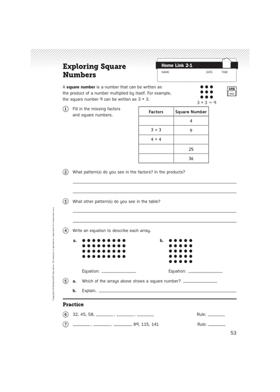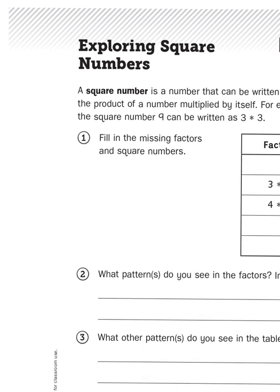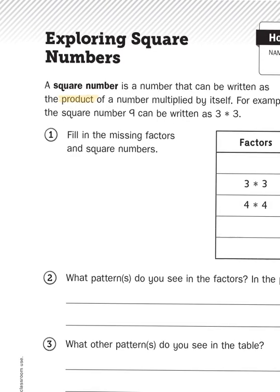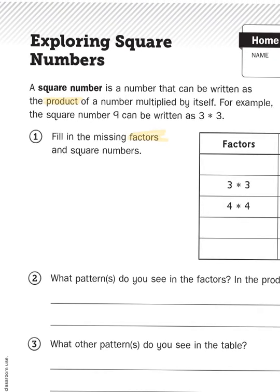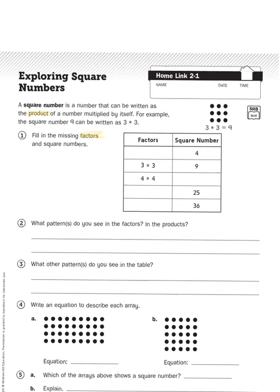It says a square number is a number that can be written as the product of a number multiplied by itself. Product, that little vocabulary word means the answer to a multiplication problem. For example, the square number 9 can be written as 3 times 3. Fill in the missing factors and square numbers. Now, if a product is the answer to a multiplication problem, the factors are the numbers that you are multiplying together.